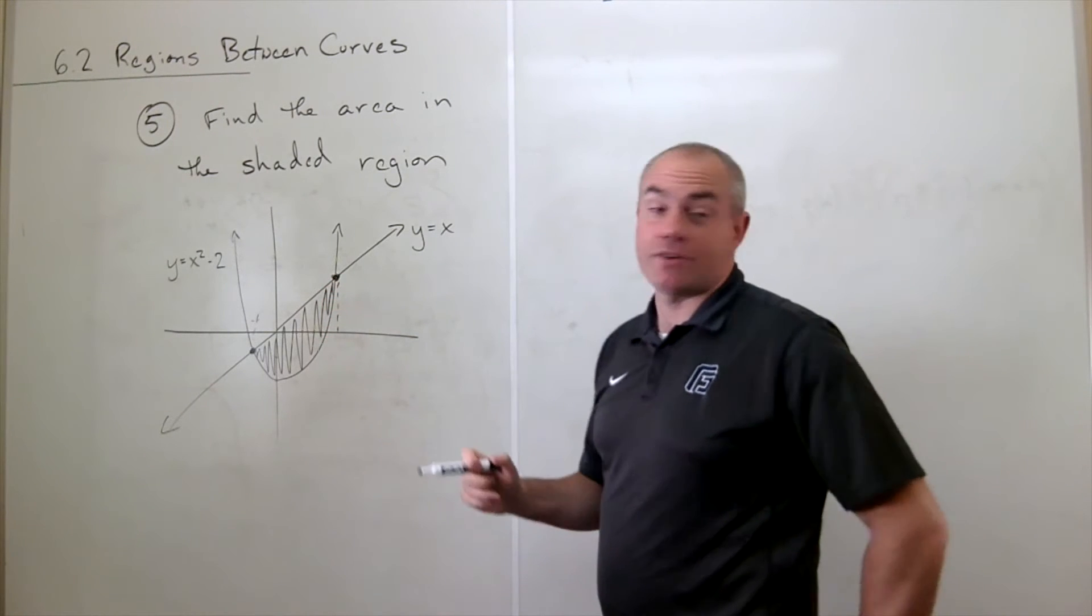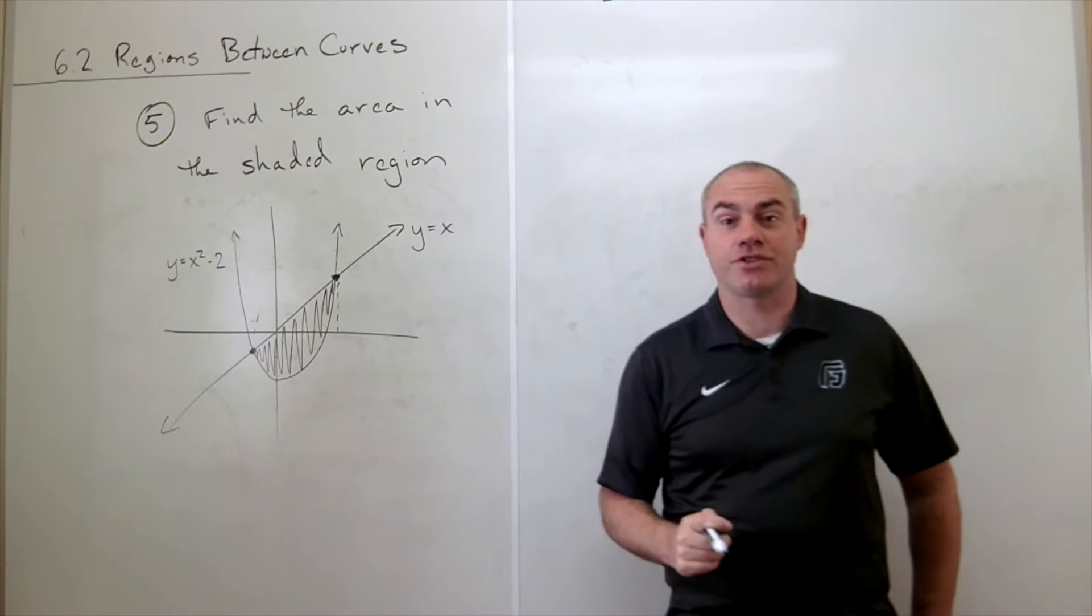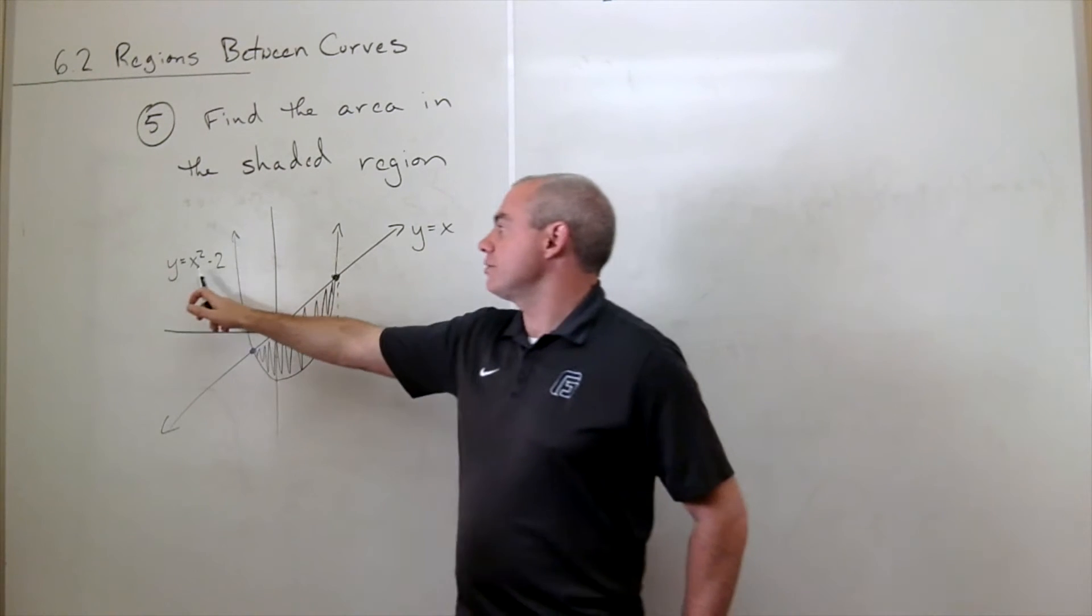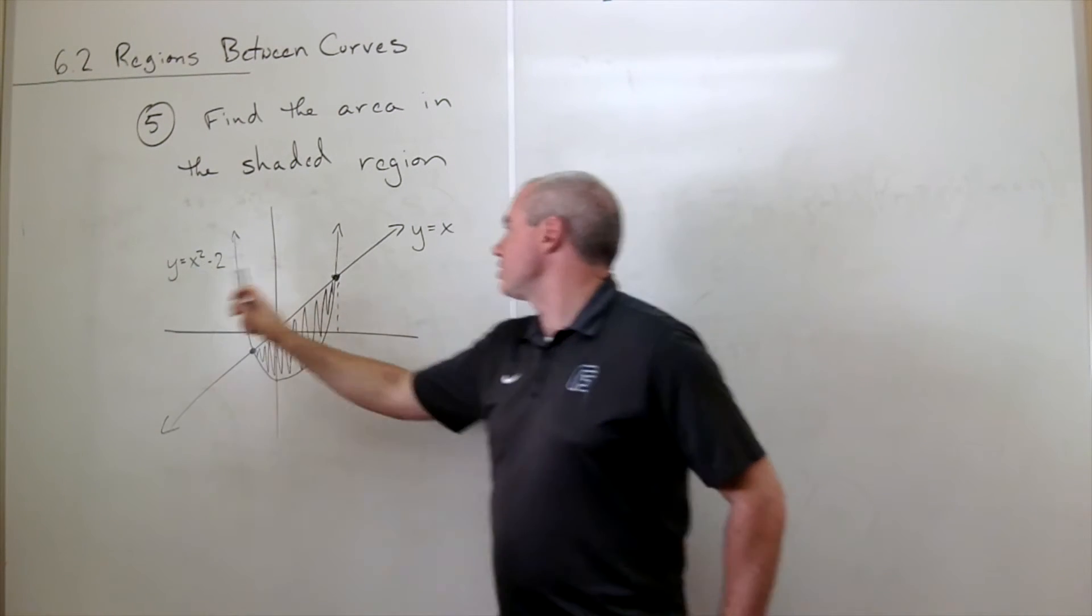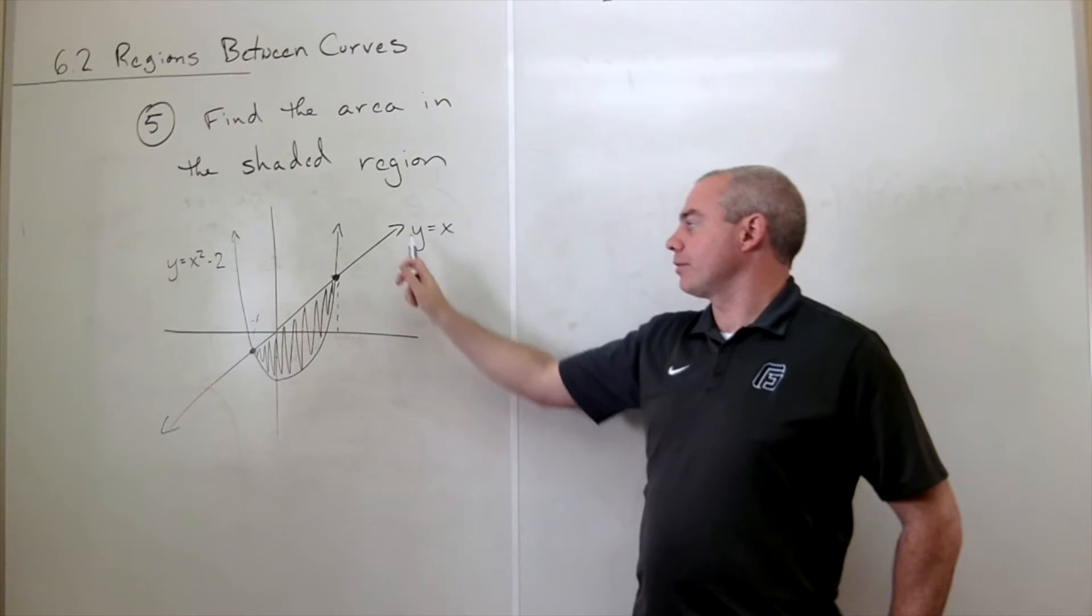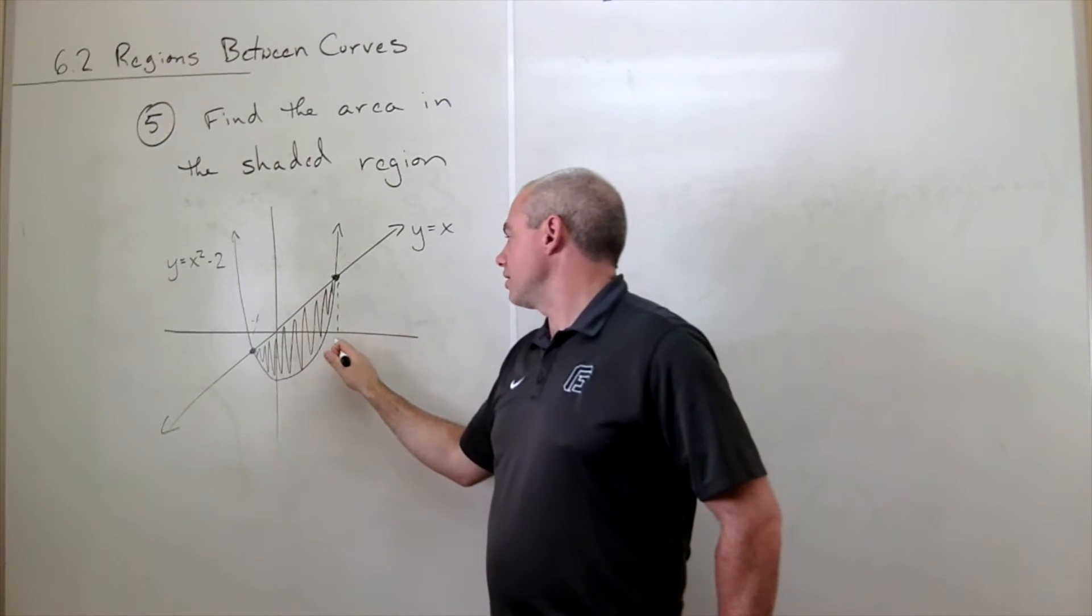And then what's the other guy? Well, it looks like it might be about two, but let's just make sure. So if we plug in two here, we get four minus two, which is two. And if we plug in two here, we would get two. So this is two.